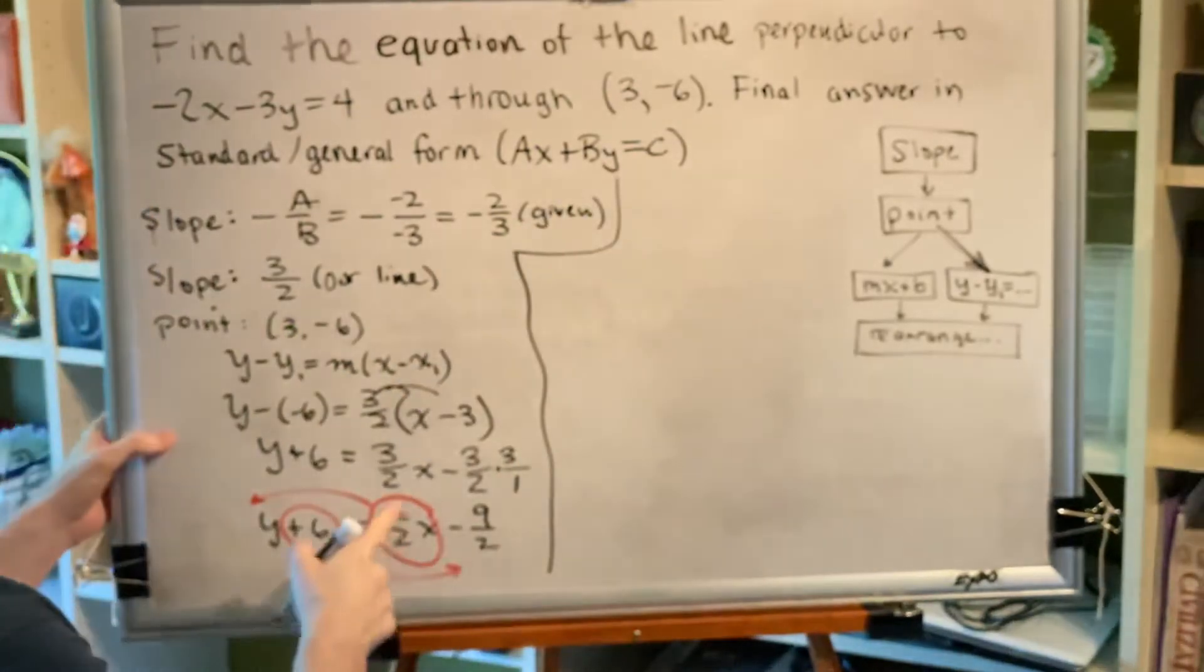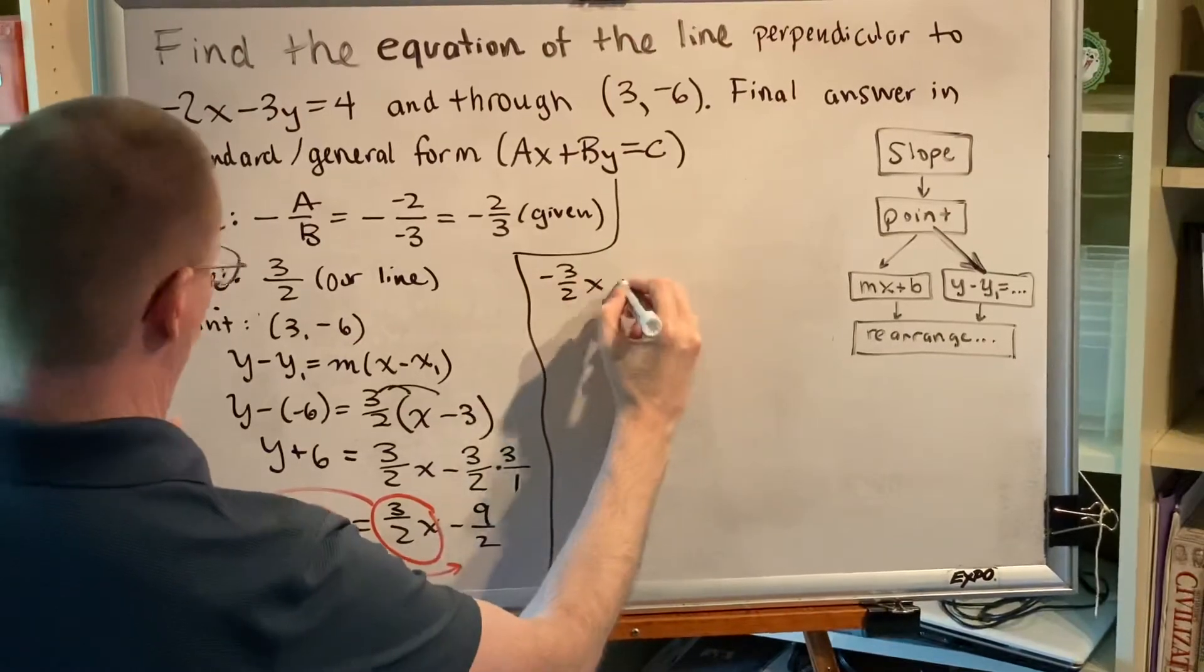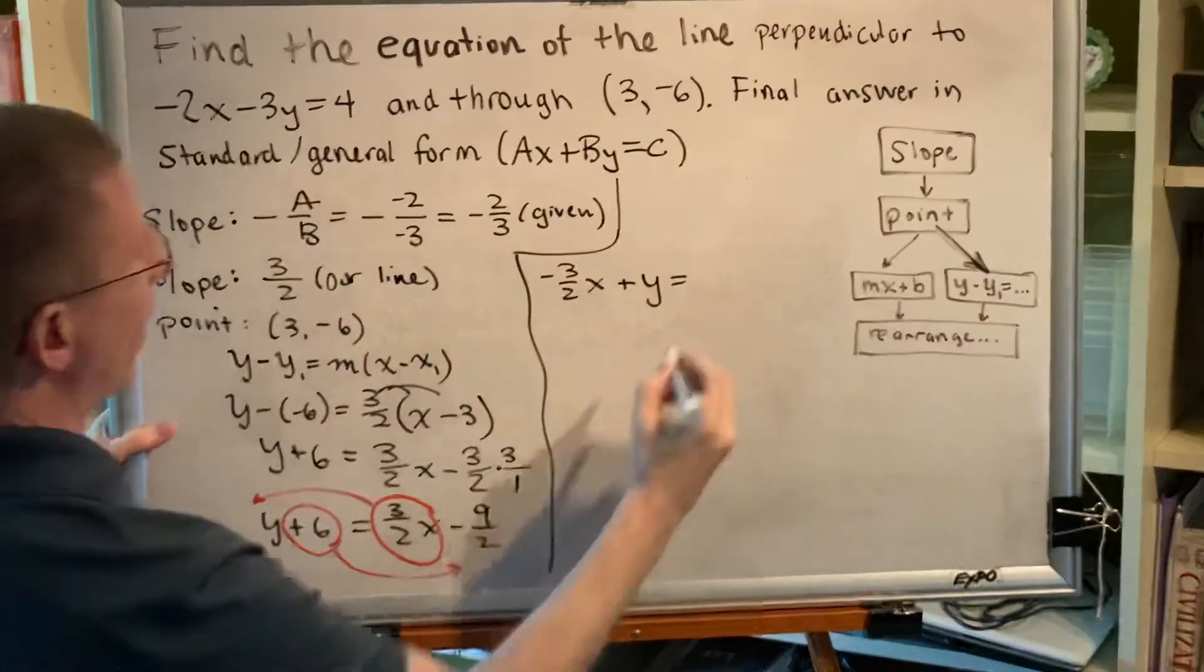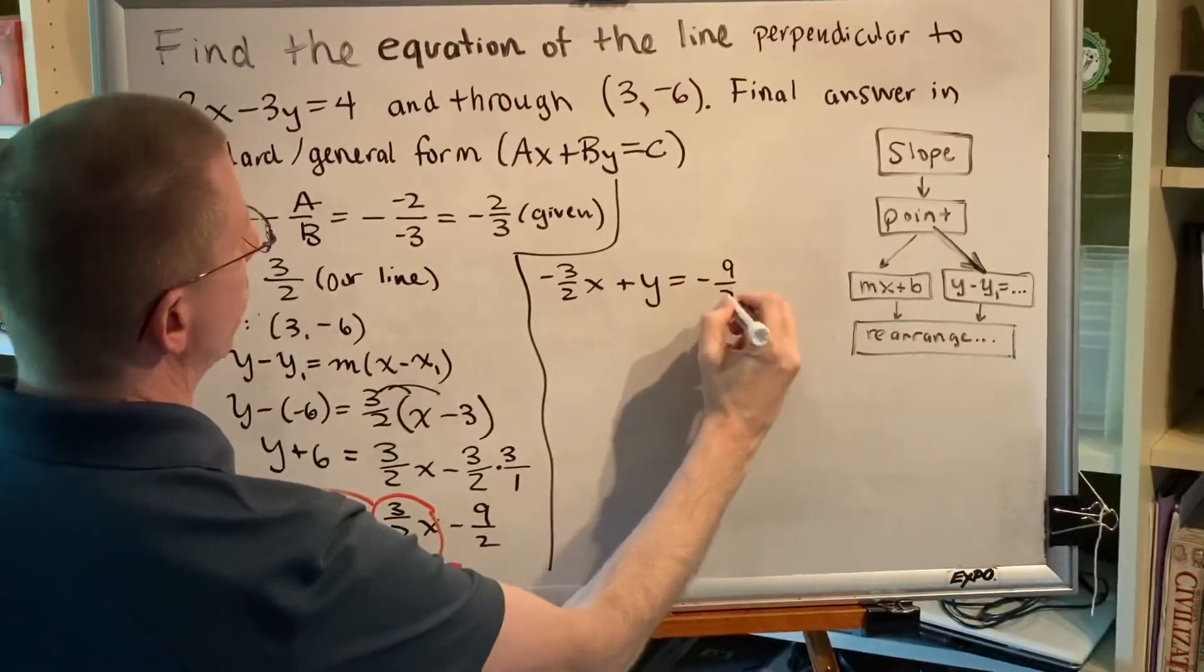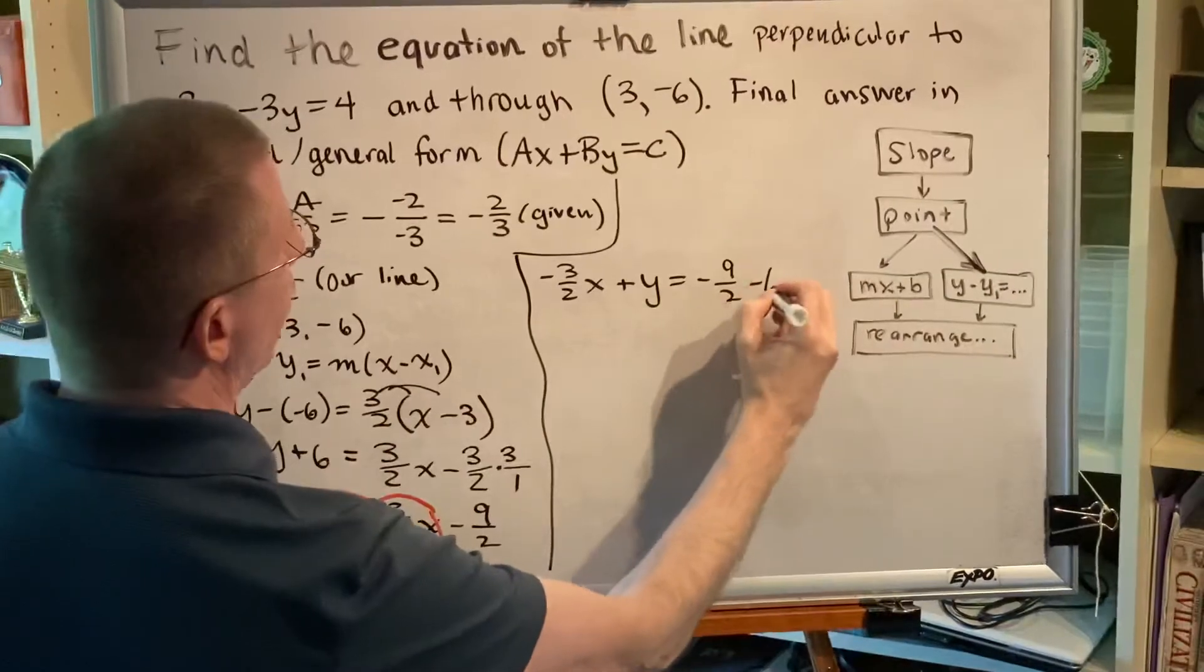So this 3/2x on the right will become a -3/2x on the left. This y on the left stays where it is. This -9/2 stays where it is. This positive 6 on the left becomes a -6 on the right.